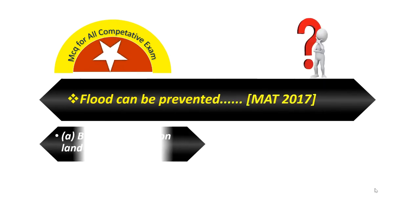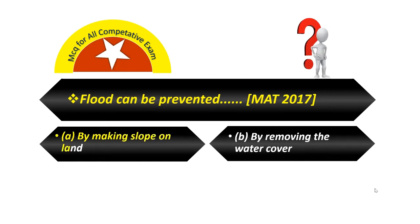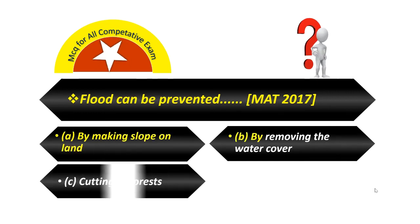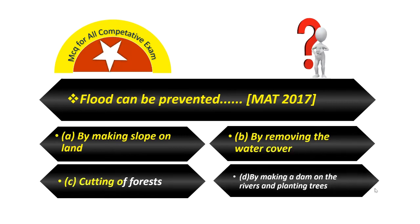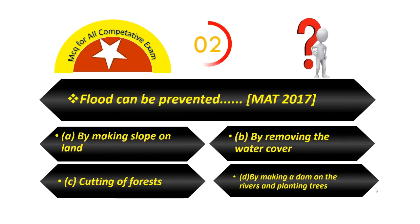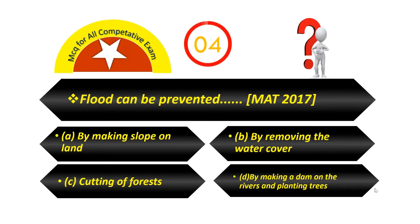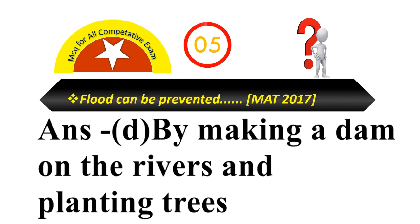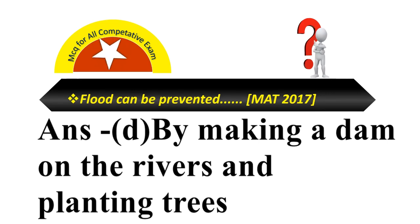Flood can be prevented by: Option A — By making slope on land. Option B — By removing the water cover. Option C — Cutting of forests. Option D — By making a dam on the rivers and planting trees. Your answer is: By making a dam on the rivers and planting trees.